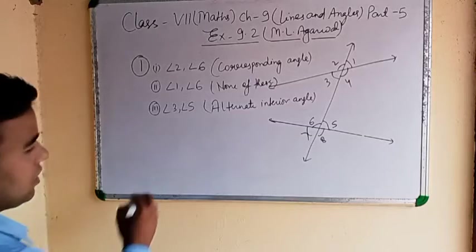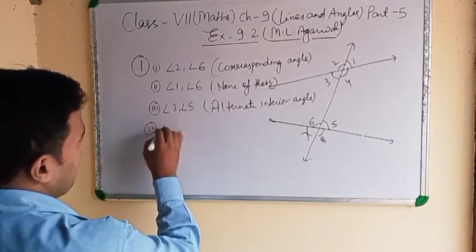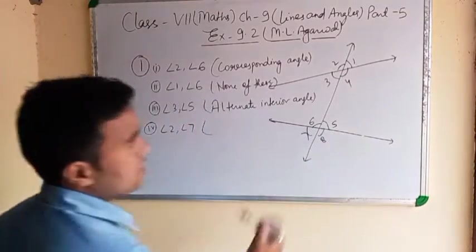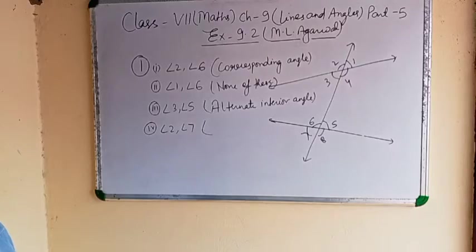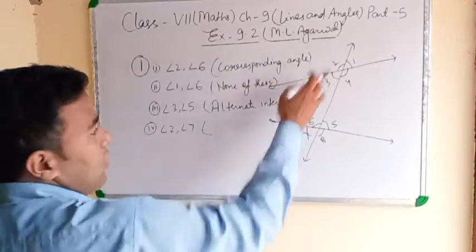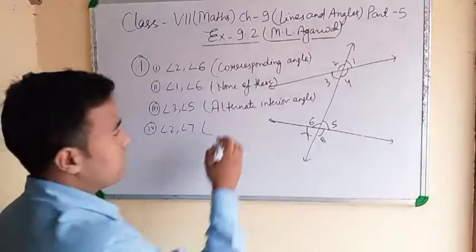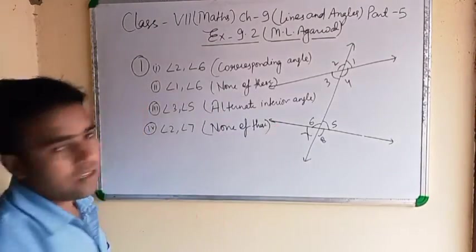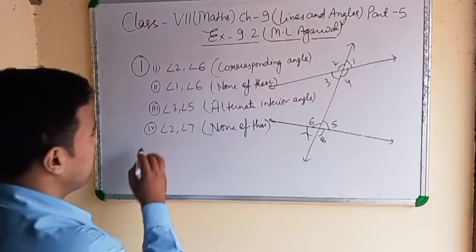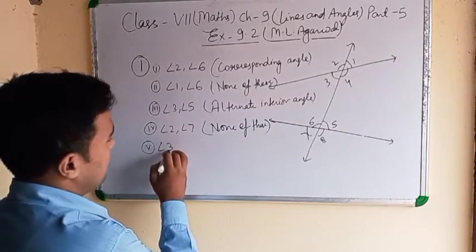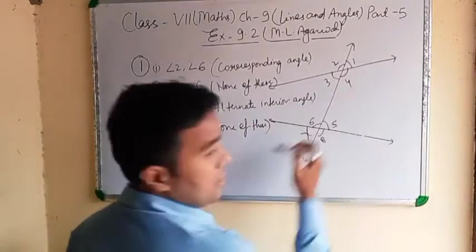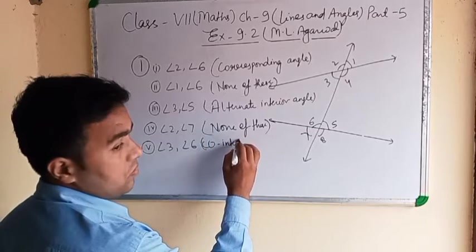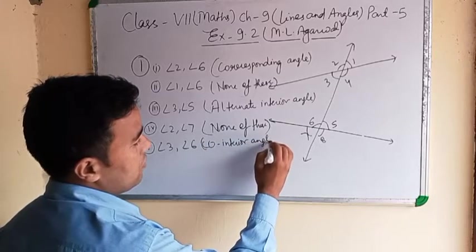The fourth one is angle 2 and angle 7. Angle 2 and angle 7 — it is also none of these. The fifth one is angle 3 and angle 6. Angle 3 and angle 6 — it is a co-interior angle.